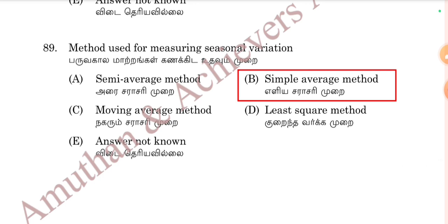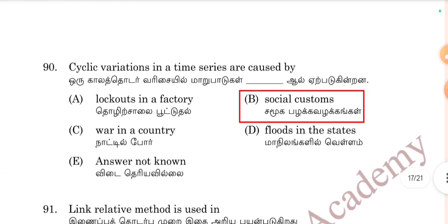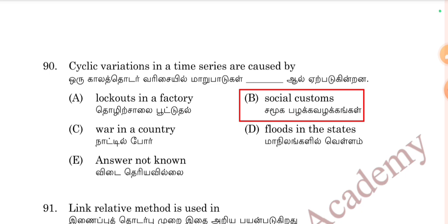The method used for measuring seasonal variation is the simple average method — Option A is correct. Cyclic variation in a time series may be caused by lockouts in a factory, social customs, or war in a country. Social customs represent cyclic variations. The link-relative method is used in cyclical variation and irregular variation — it is never used for seasonal variation.